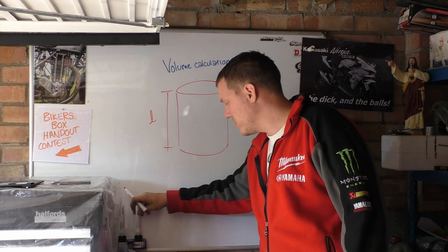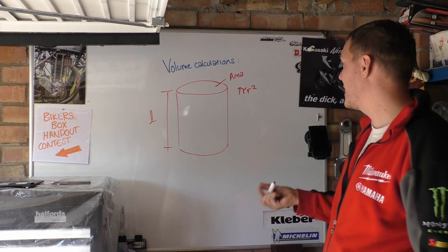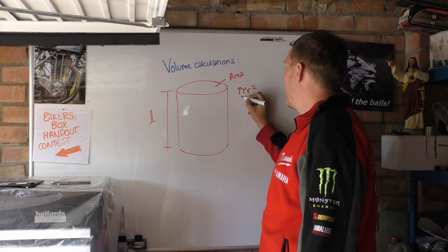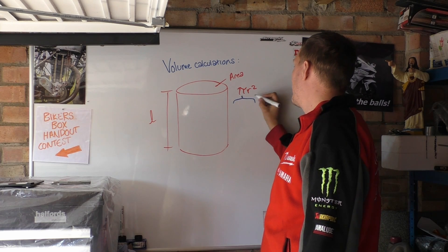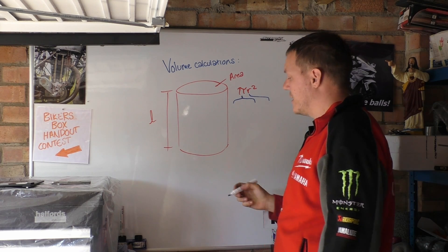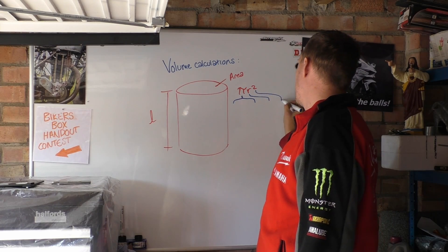Well you need pi r squared, not 2 pi r. So you've got pi there, you've got your radius there and you've got your square there.